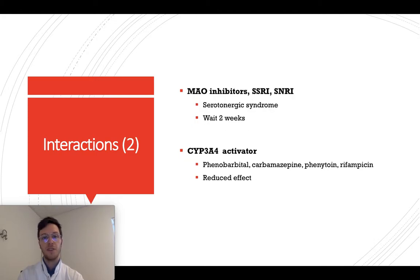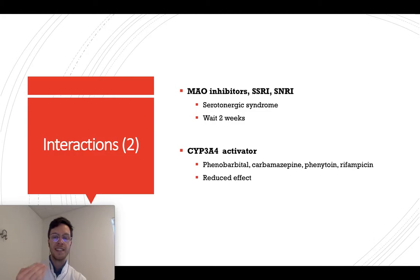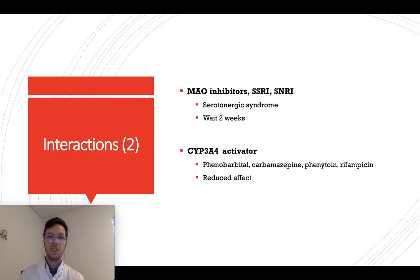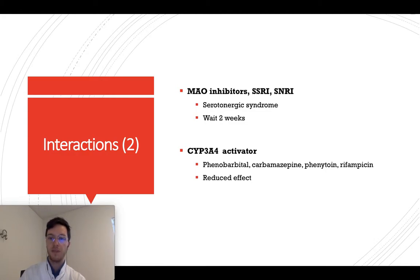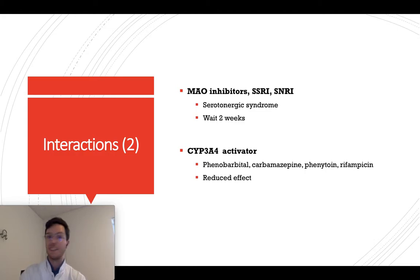Other interactions include fentanyl with MAO inhibitors or selective serotonin reuptake inhibitors (SSRIs). This combination can lead to serotonin syndrome, which is very serious and dangerous. Therefore, you must stop using a MAO inhibitor and wait two weeks before starting fentanyl. When combined with CYP3A4 activators like carbamazepine or rifampicin, the effect of fentanyl may be reduced, decreasing the pain-killing effect.